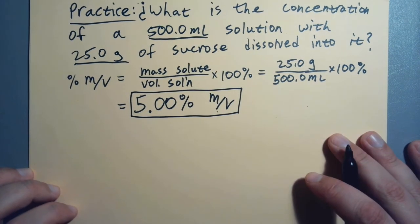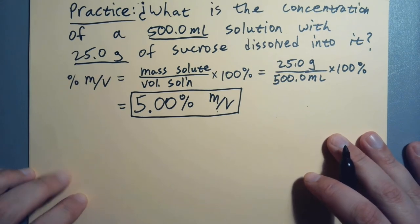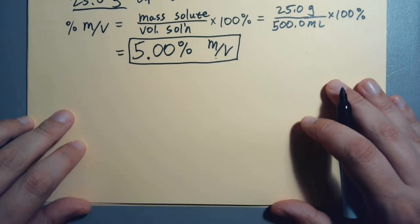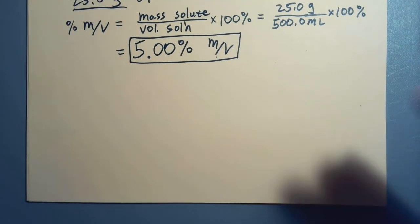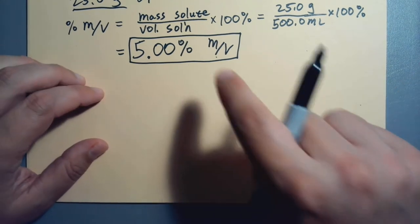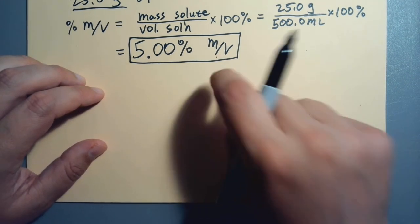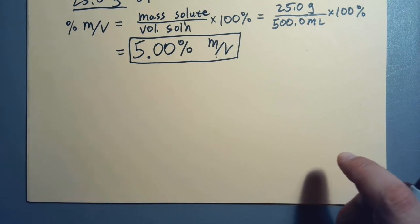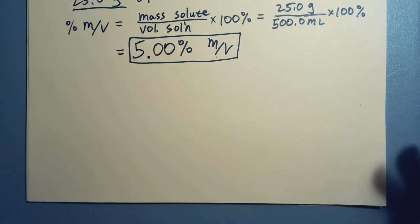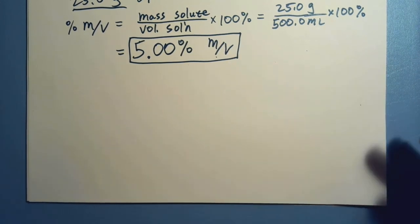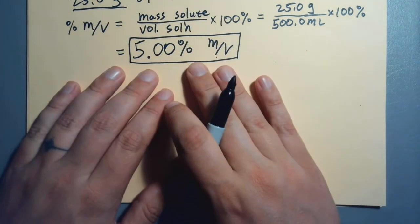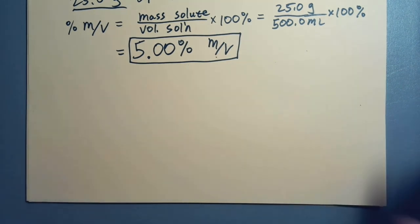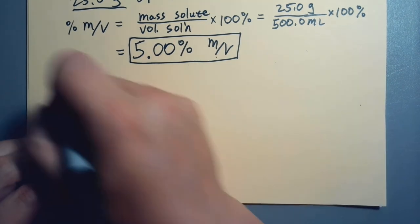So there you go. Maybe you have to do a calculation. It's a good habit to box your answers. Think of your poor instructors that have to grade this stuff. That's our first unit. I've got to give you a mass, a volume, and you just one over the other, then multiply by 100%. Watch your sig figs. You're home free.